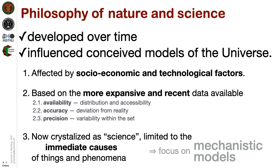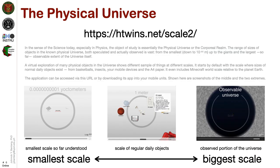It is also important to realize that our science today is limited to the immediate causes of things and phenomena, and therefore focuses mostly on mechanistic models. In our science today, especially in physics, the object of study is essentially the physical universe or the corporeal realm. The range of sizes of objects in the known physical universe, both speculated and actually observed, is vast from the smallest up to the largest so far.